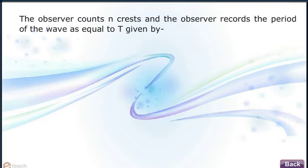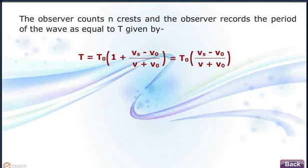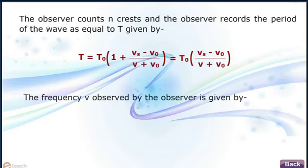The observer counts N crests and records the period of the wave as equal to T given by T equals T0[(Vs minus V0) upon (v plus V0)] equals T0[(Vs plus v) upon (v plus V0)]. The frequency ν observed by the observer is given by ν equals ν0[(V0 plus v) upon (v plus Vs)].